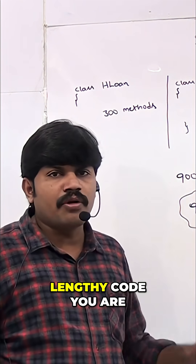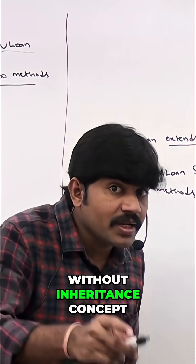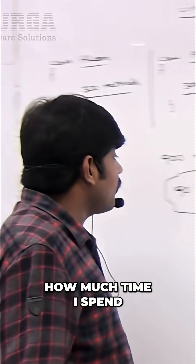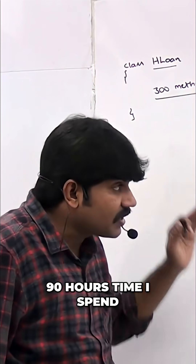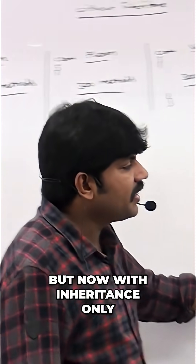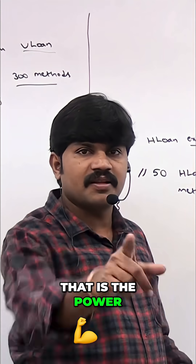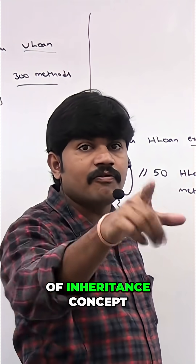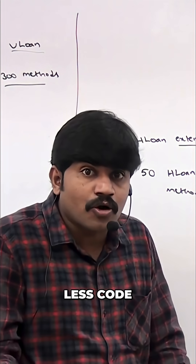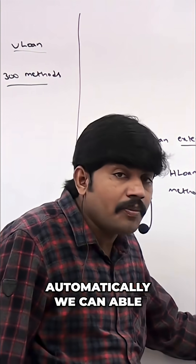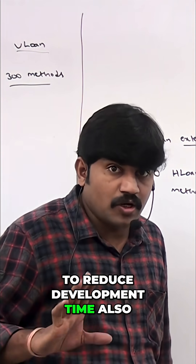Without inheritance, how much time did I spend? I wrote 100 methods and spent 90 hours. But now with inheritance, only 40 methods and 40 hours of time. That is the power of the inheritance concept — code reusability, concise code, lesser code, and automatically we can reduce development time as well.